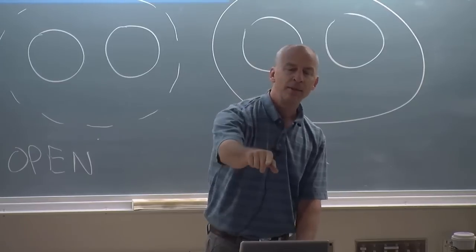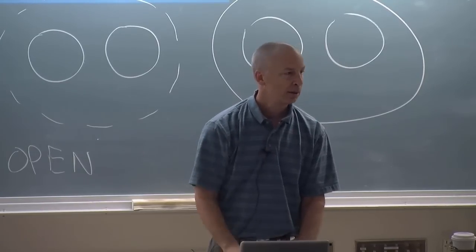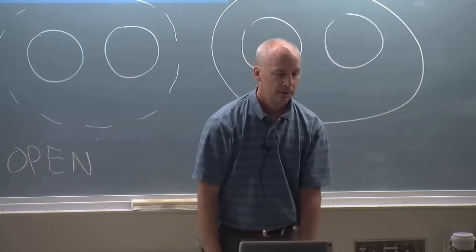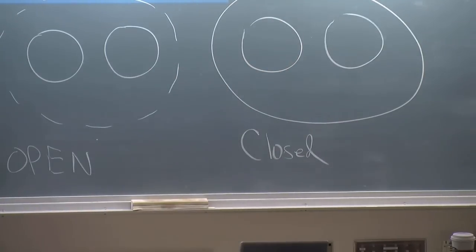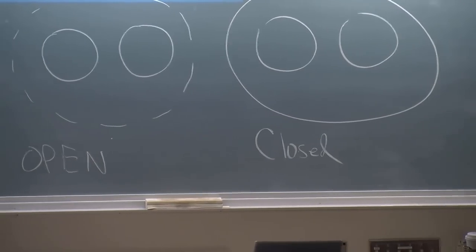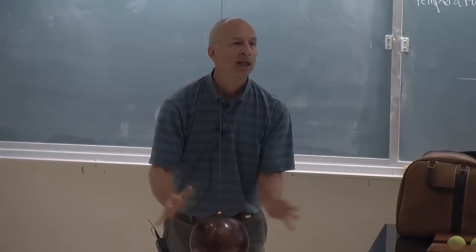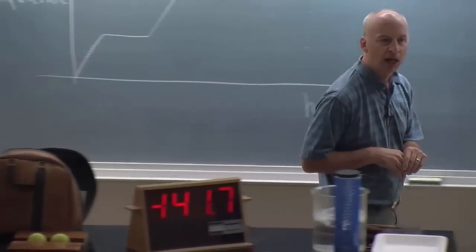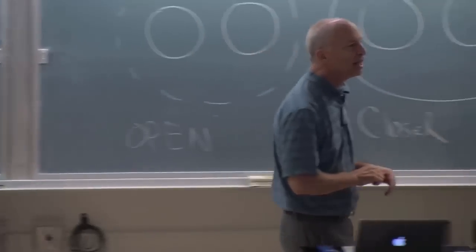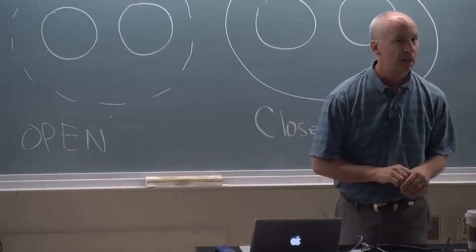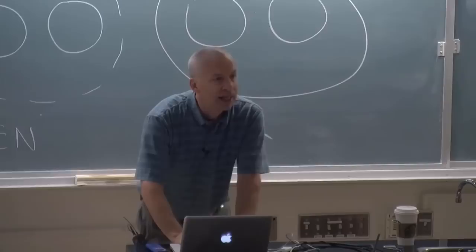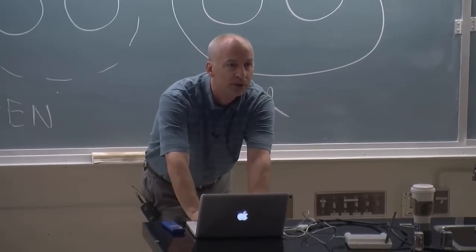If I gain 20, somebody else lost 20. If I transfer one joule of energy to this by putting my hands on it and heating it up a little, I lost one joule of energy. This bowling ball gained one joule of energy. That transfer is equal and opposite. My change in energy is negative one joule because I lost energy. The bowling ball's change in energy is plus one joule because it gained it.